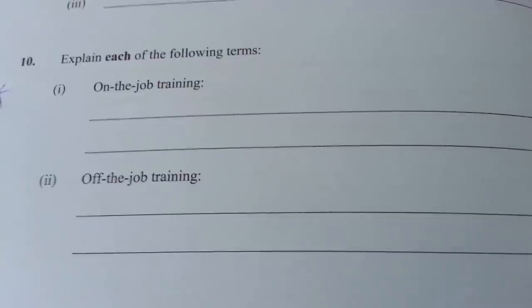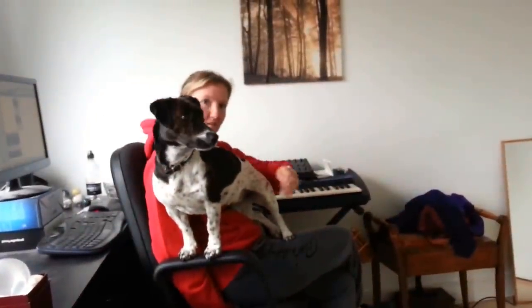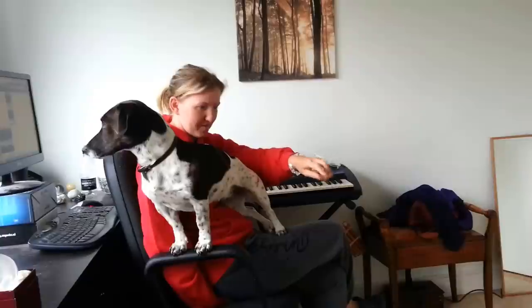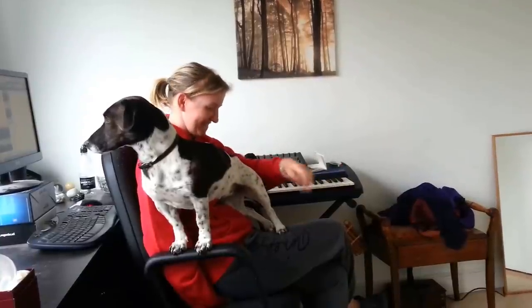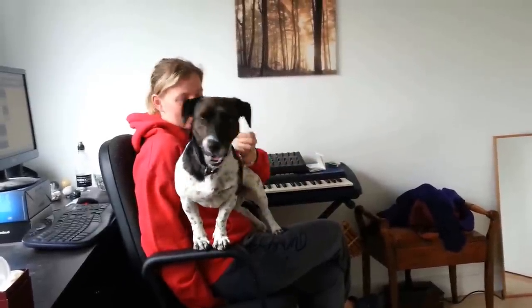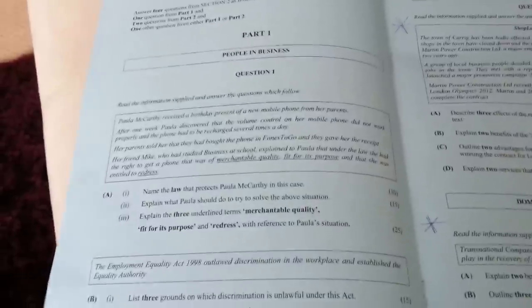This one here is another example of one that's very guessable because the answer is kind of in the question: explain each of the following terms - on the job training and off the job training. On the job training means they train you on the job. That's an A in your ordinary level Leaving Certificate business right there. So that's the short questions - just an example of how unbelievably doable and nice they are.